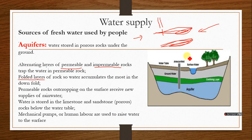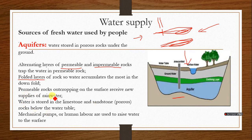When layers are folded — possibly because of compressional forces from two edges — the layers become folded. In the downfold area, you now have a high concentration of water. These are impermeable layers, so you now have a store of water beneath the earth's surface, referred to as the groundwater aquifer. Permeable rocks cropping on the surface receive new supplies of water, which percolate and are stored in limestone and sandstone porous rock below the water table. Mechanical pumps or human labor are usually used to raise the water to the surface.